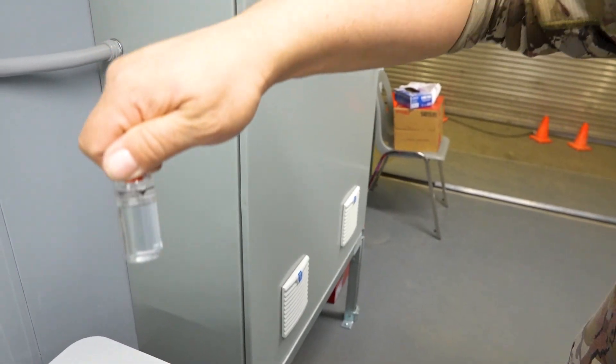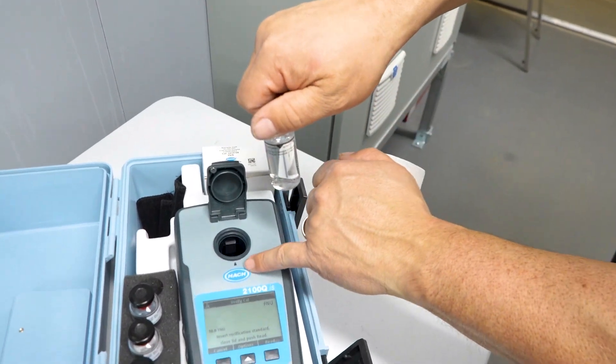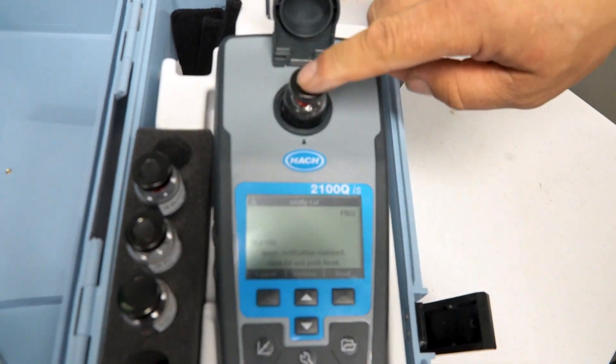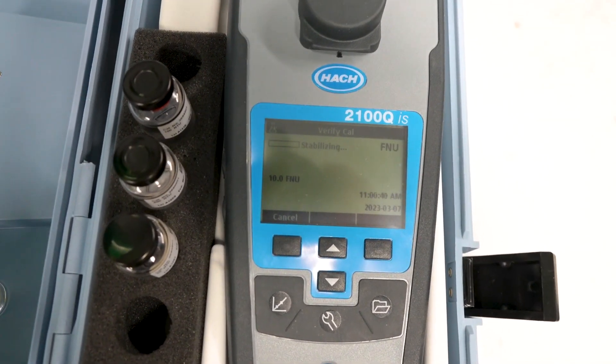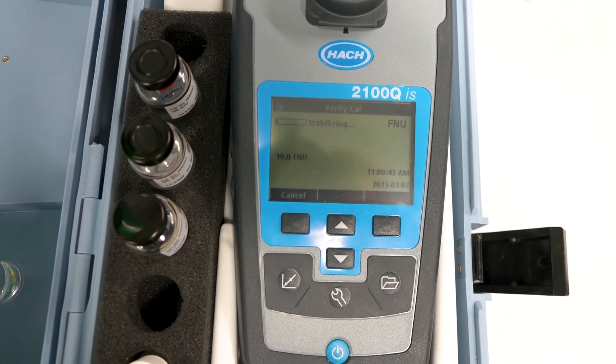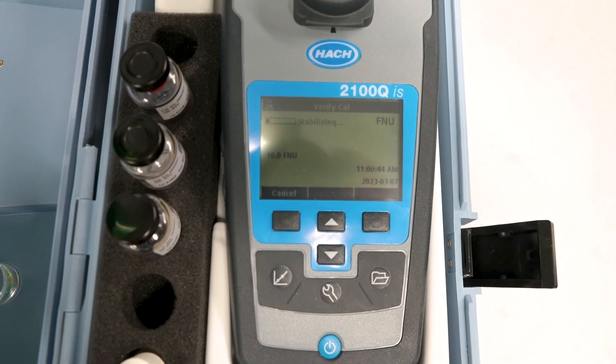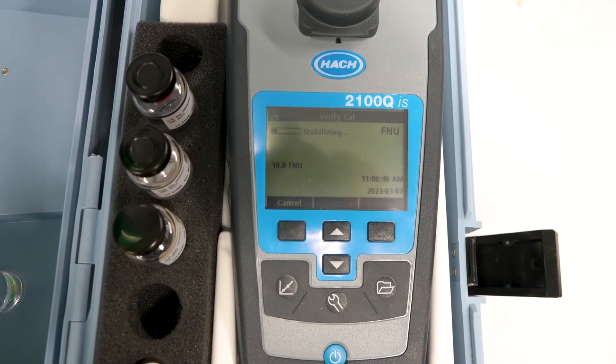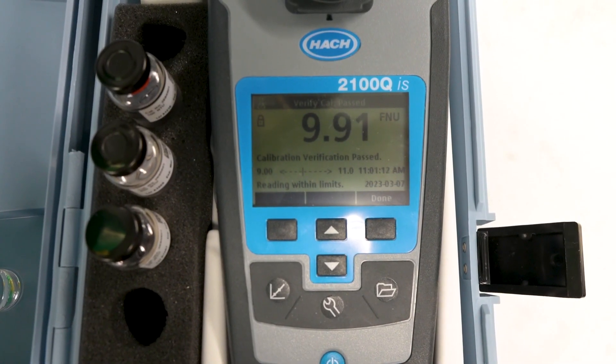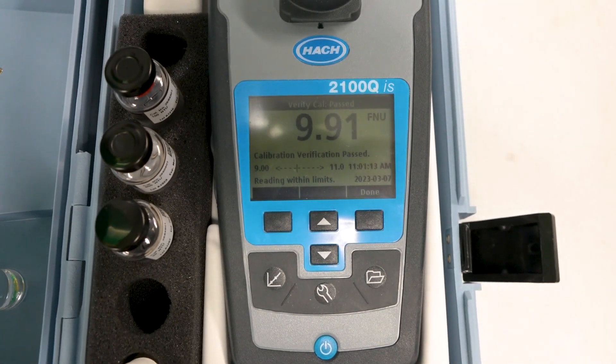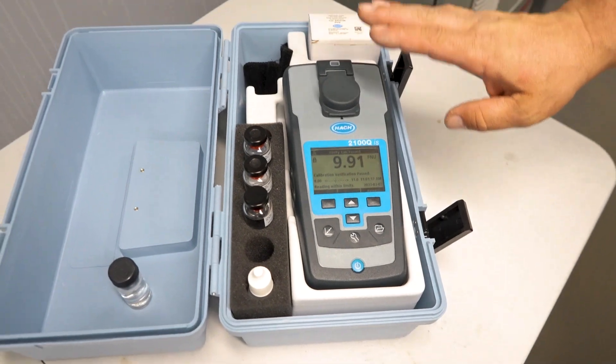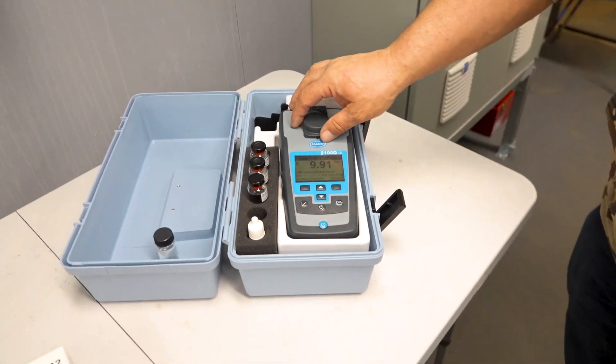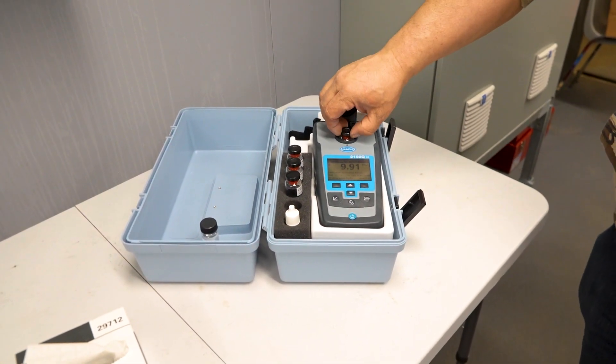Once it's mixed up, the same thing, arrow to arrow, push it in, close your lid, and then hit read. And this unit will tell you if it's within range or not. Seeing it says our calibration verification has passed, so in a normal situation you wouldn't go any further than this, but for today we're going to go through an actual calibration on the unit.